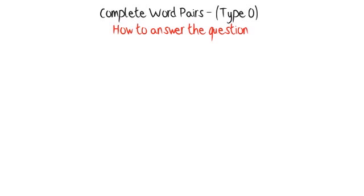How to answer the question: look at the first group of words, then work out the positions in the first word of the letters in the second word. Work out the sequence order of the letters in the second word. Now look at the second group of words and see if the positions of the letters in the second word are in the same position in the first word of the second group and are they the same sequence as in the first group. You should have now found the rule. Once you know the rule you can use it to work out what word is missing in the third group.